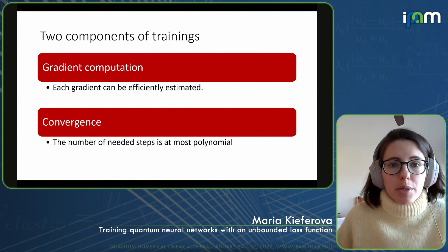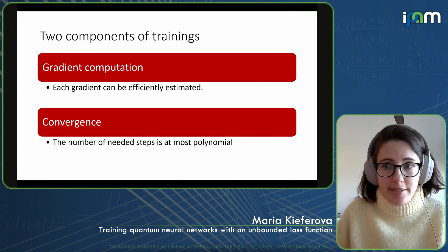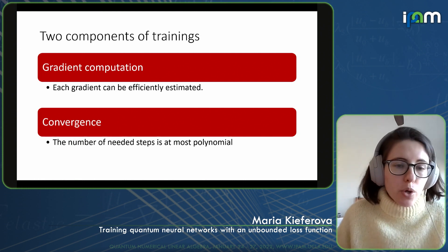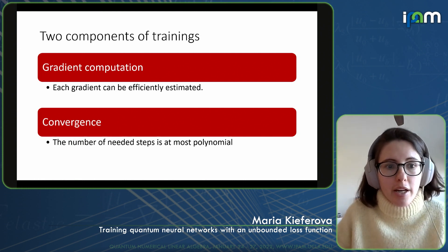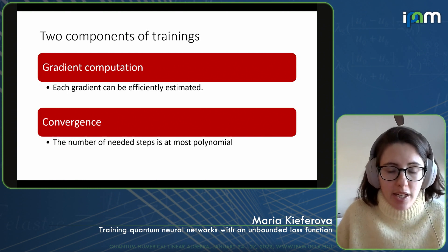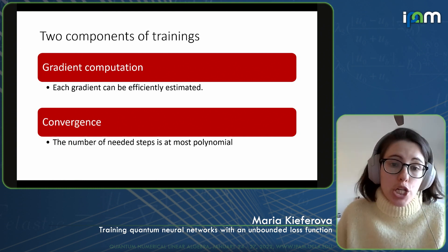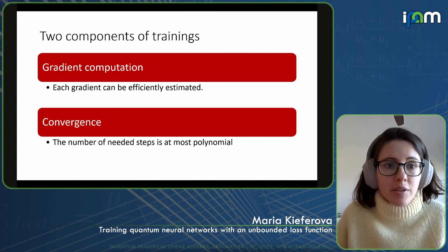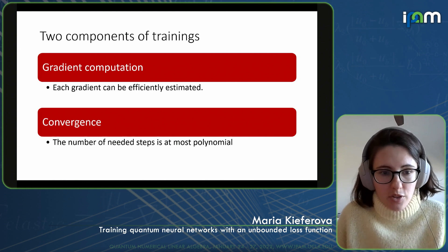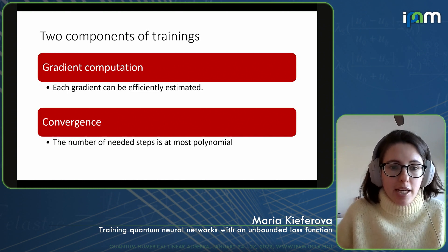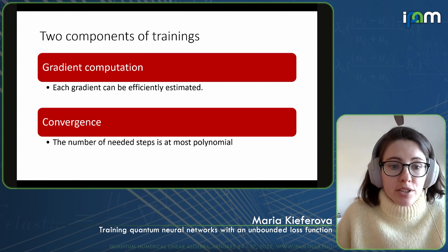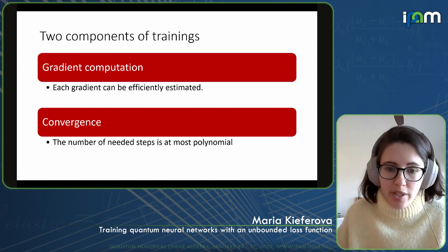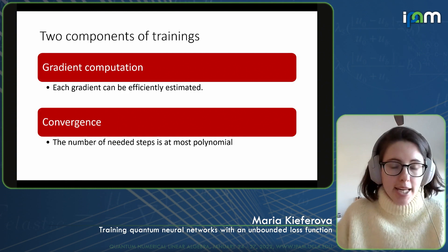The most common type of training is based on gradient descent. To make training efficient, we need two components that are both efficient. First, every time we estimate a gradient, this computation must be efficient — it can take at most polynomial steps. Second, we need an algorithm that converges sufficiently quickly, such that the number of steps needed to find a good enough solution is at most polynomial.